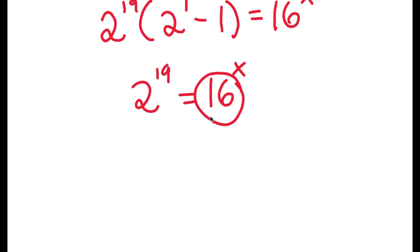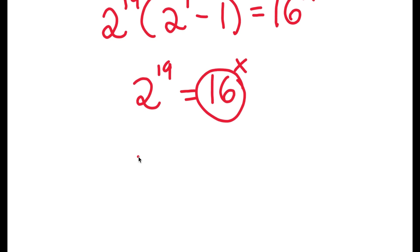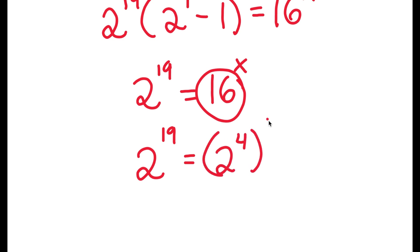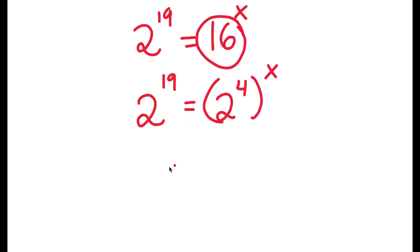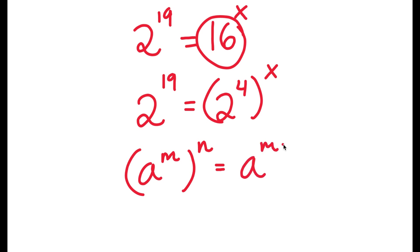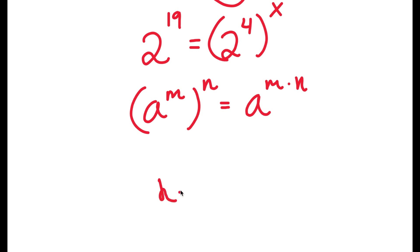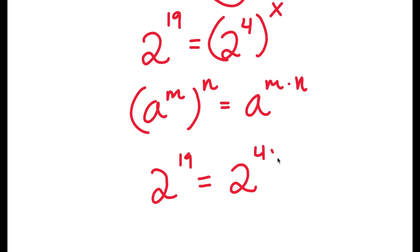Now, 16 is the same thing as 2 to the power of 4. So now I have 2 to the power of 19 is equal to 2 to the power of 4 to the power of x. And if I have something in the form a to the power of m to the power of n, this is equal to a to the power of m times n. So 2 to the power of 4 to the power of x equals 2 to the power of 4x.